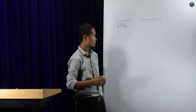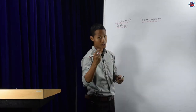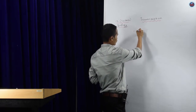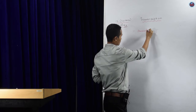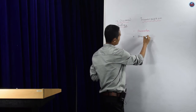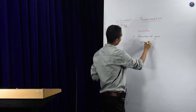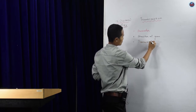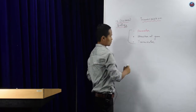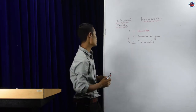Hello students. In the previous class we discussed about the structure of the transcriptional unit. Basically, the transcriptional unit has three areas: the promoter, the structural gene, and the terminator. Now, since we have discussed these three types, we are going to go into the detailed process of transcription.